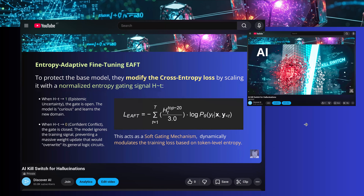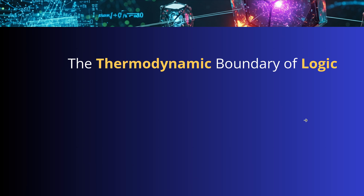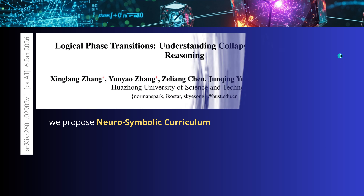Guess what? This entropy adaptive fine-tuning was just the first step, because today we're going a step further. We're not limiting ourselves to entropy — we look at the general thermodynamic boundary, but now not of fine-tuning alone. Now we go for reasoning. Now we go for logic. Causal reasoning.